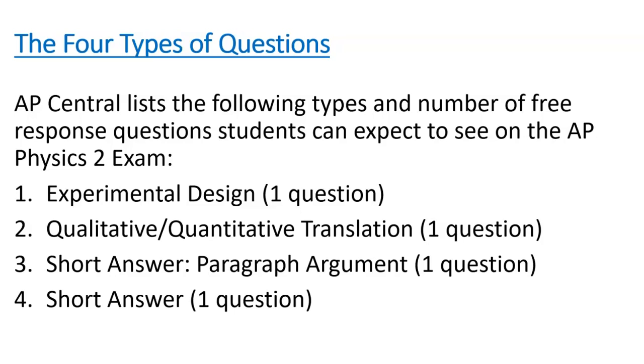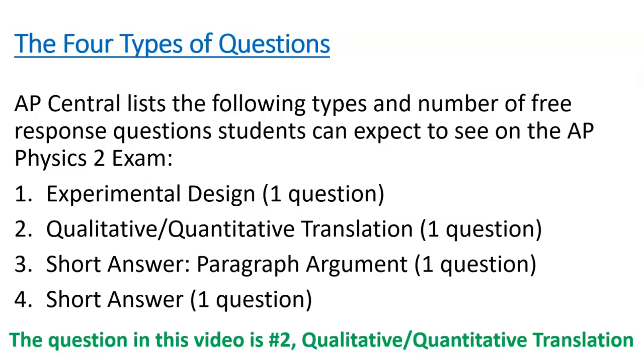According to AP Central, students can expect the four following kinds of questions on the AP Physics 2 exam. There will be one question on experimental design, one on qualitative to quantitative translation, one paragraph length response, and one short answer. And the question in this video is type 2, qualitative to quantitative translation.